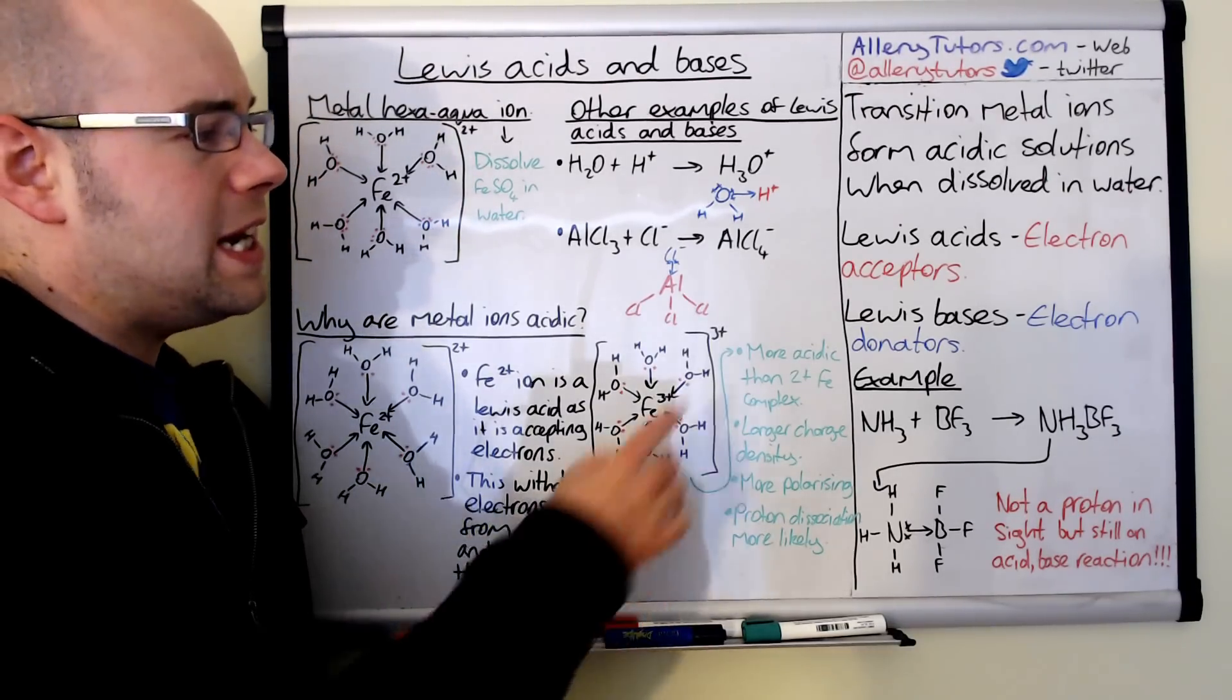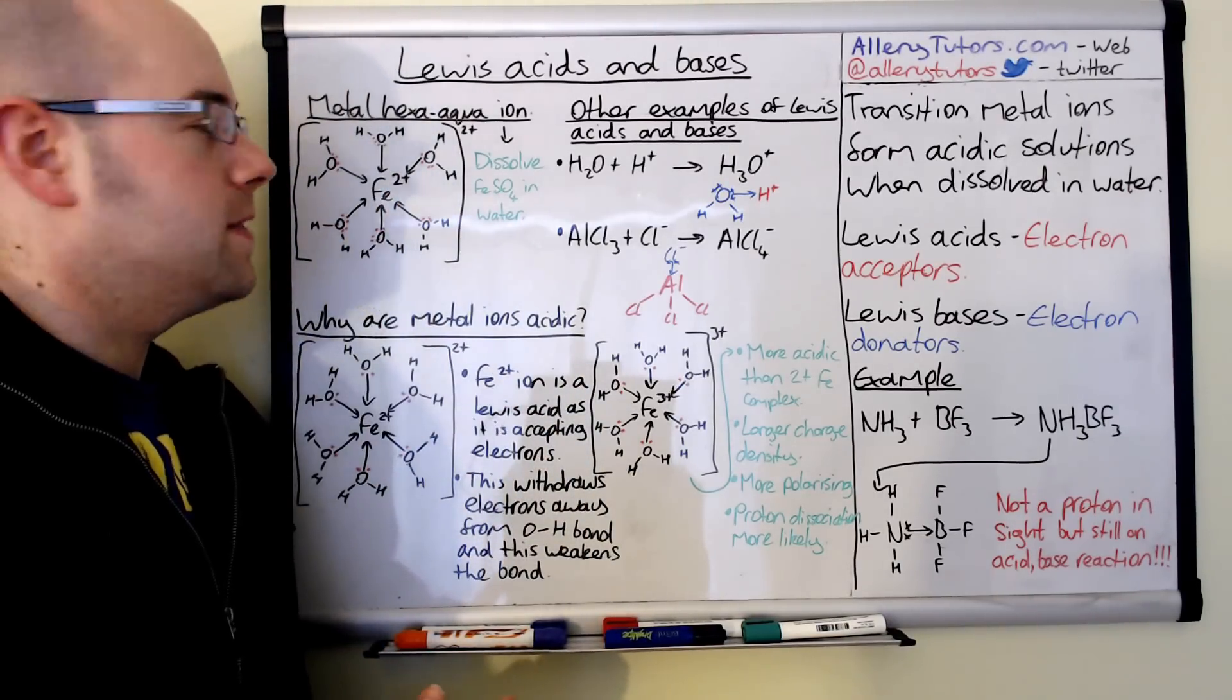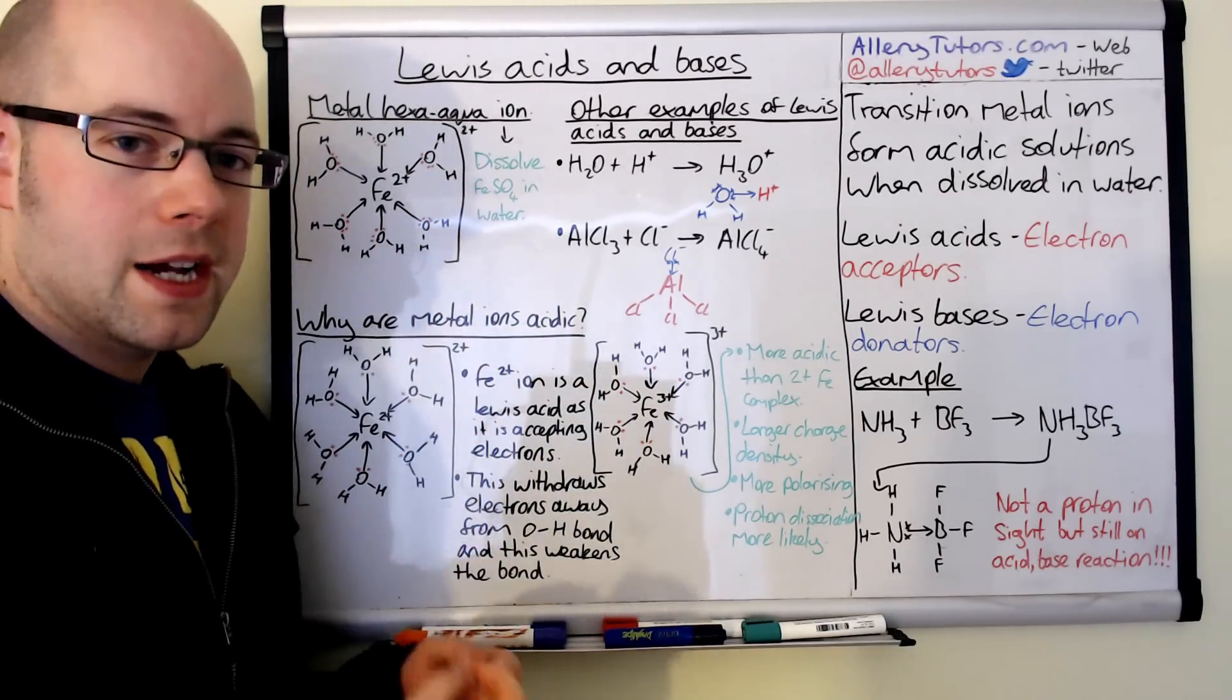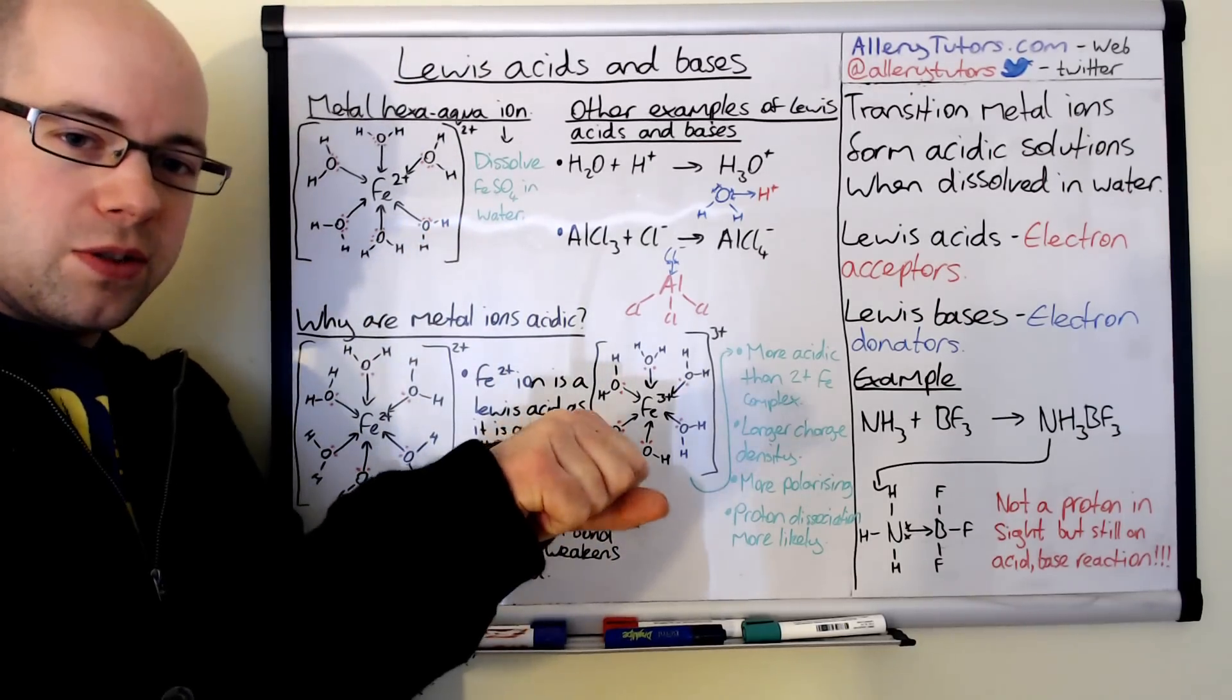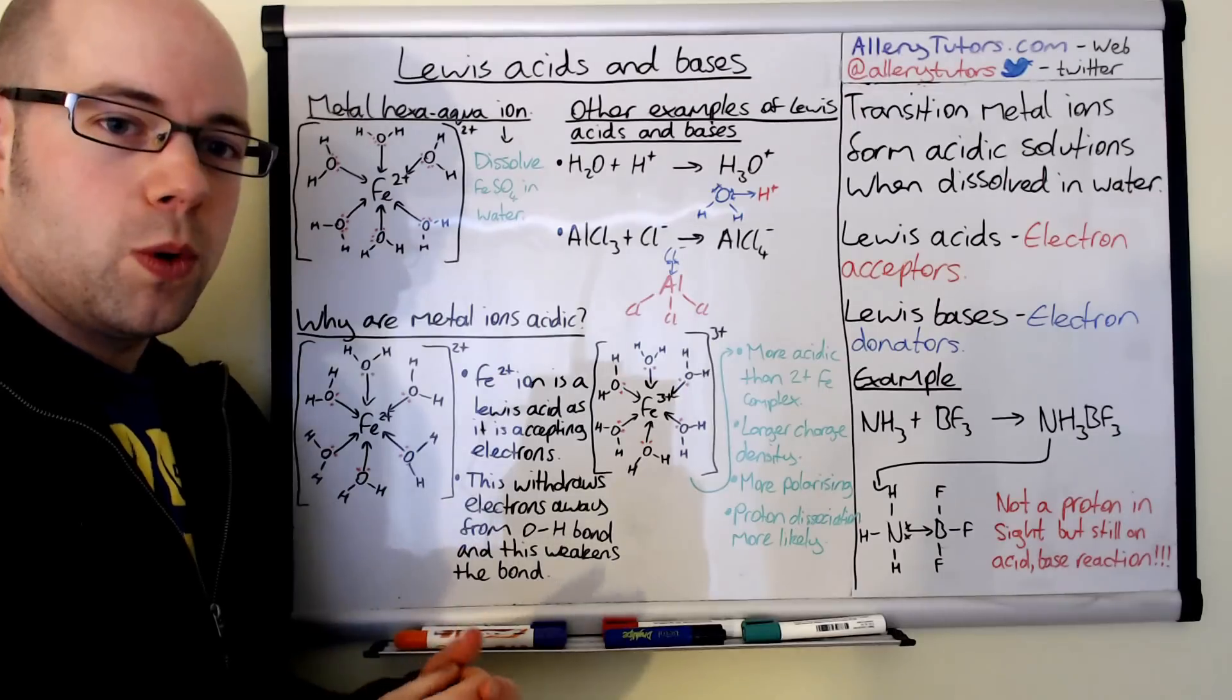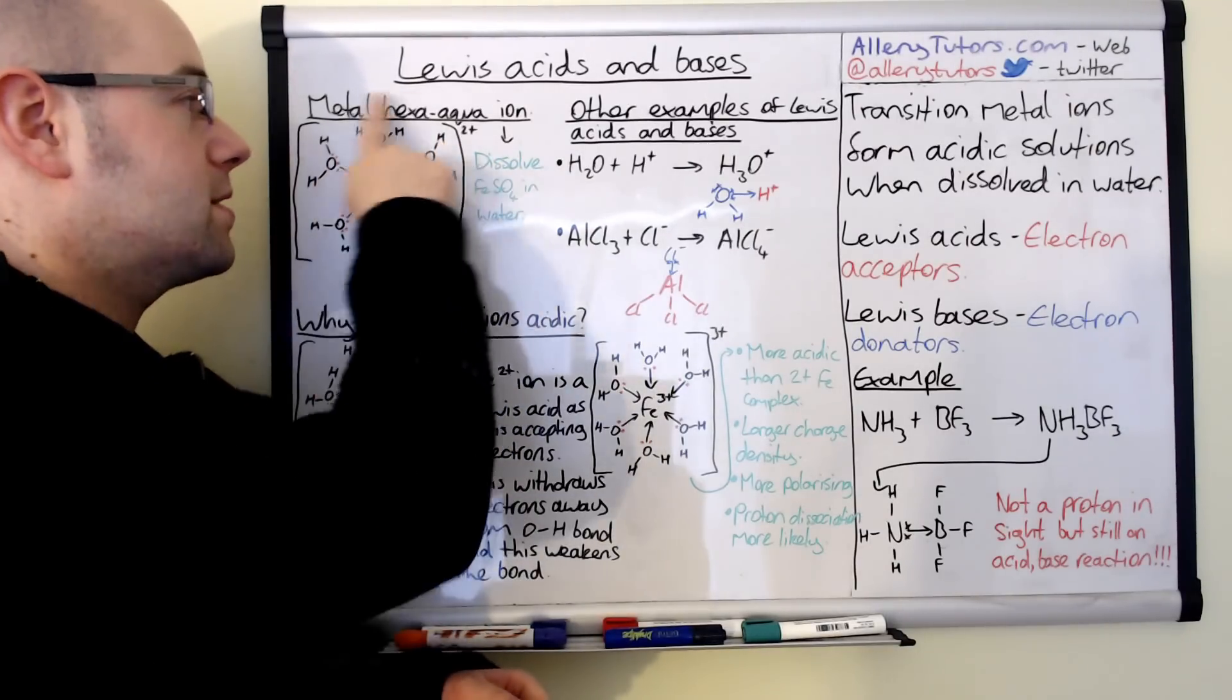We're just going to link this now with transition metal complexes. I've got up here an iron aqua-ion. If we take a transition metal compound like iron sulfate as a solid and add that to water, the iron and sulfate break apart. Then the iron part, the transition metal part, is surrounded by six water ligands. Water is a neutral charge, and therefore the overall charge on this complex is 2+.